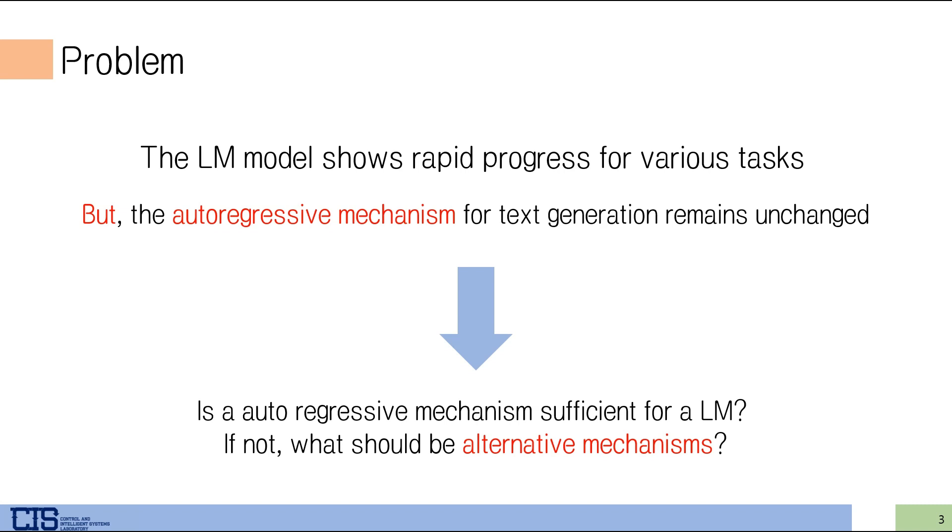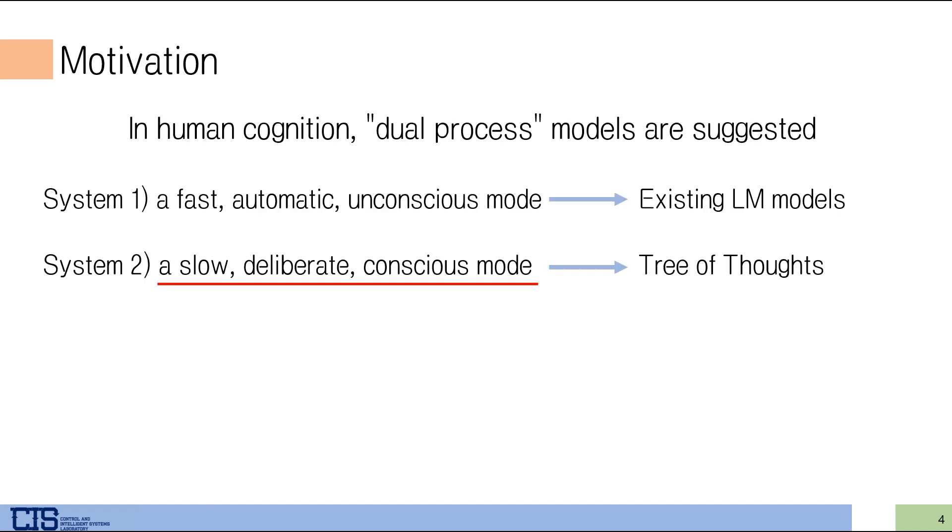If not, is there any alternative mechanism? In human cognition study, they suggest there are two different modes when humans engage with decisions. One is a fast, automatic, and unconscious mode, and the author says this resembles existing large language models. The other one is a slow, deliberate, and conscious mode, and this is what the author wants to present.